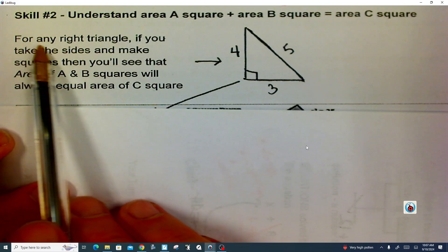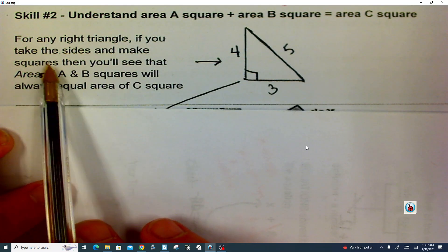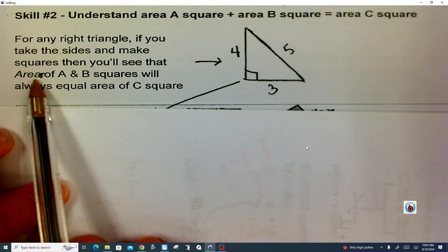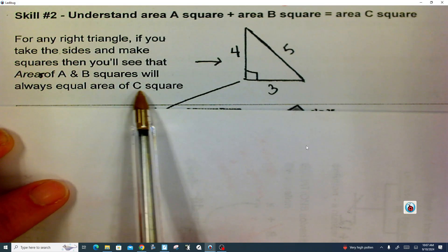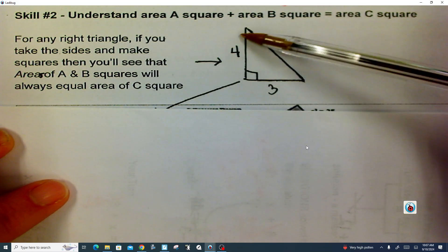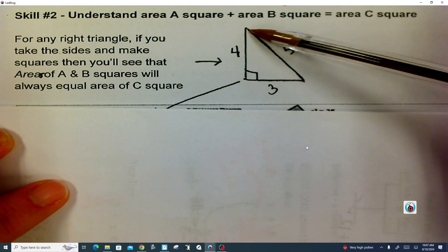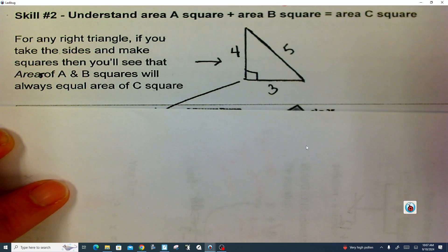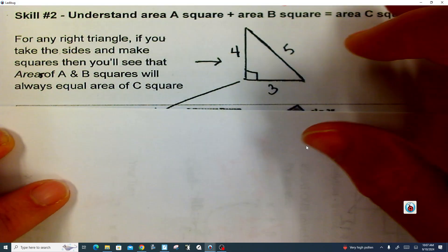So for any right triangle, if you take the sides and make squares, then you'll see the areas of A and B squares will always equal the area of C square. So here is our right triangle. This side is 4, this side is 3, and this side is 5. It's a very famous right triangle that you'll see over and over again.